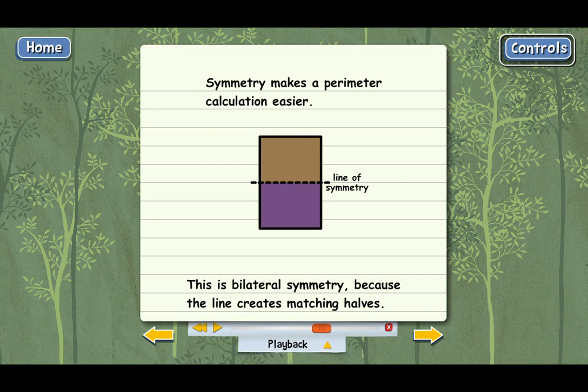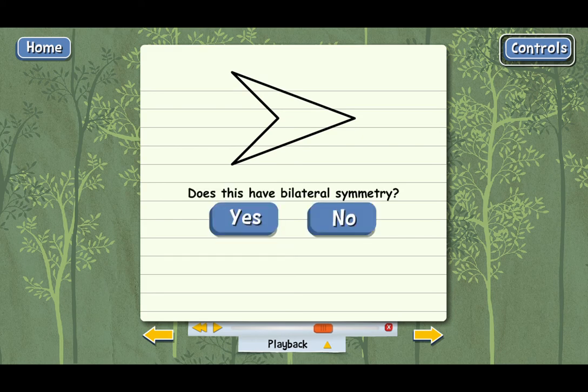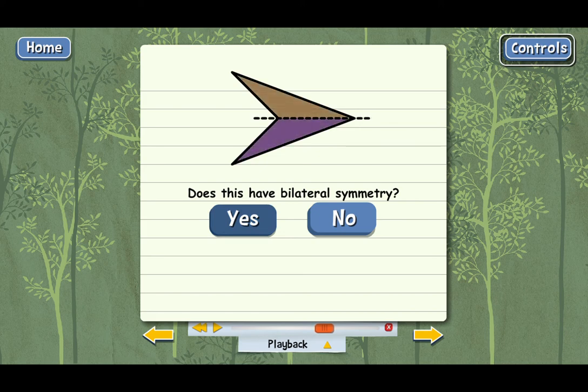Now let me ask you a couple of questions. Here's another figure. Does this have bilateral symmetry? That's right. A horizontal line cuts this figure into two matching halves, so that's why this qualifies as bilateral symmetry. It doesn't have a vertical line of symmetry, because, see, a vertical line doesn't create matching halves. These two sides are different. The figure does have a horizontal line of symmetry.